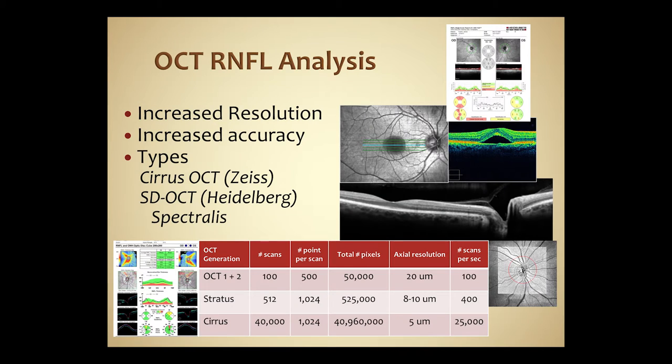We've found OCT to be very useful for nerve fiber layer analysis and following these patients. With the increased resolution of modern OCT devices — the Cirrus from Zeiss and the Spectralis — we can accurately measure the nerve fiber layer, which has been very helpful in monitoring. We look for areas that are progressing and when we see that, we try to increase the aggressiveness of our glaucoma treatment.